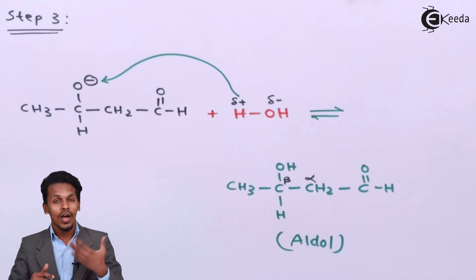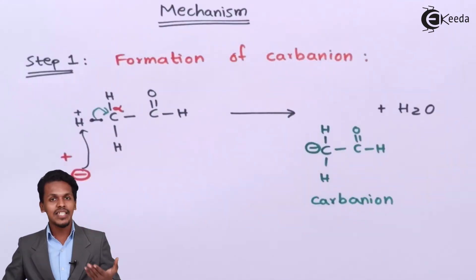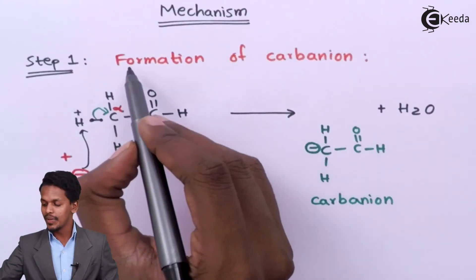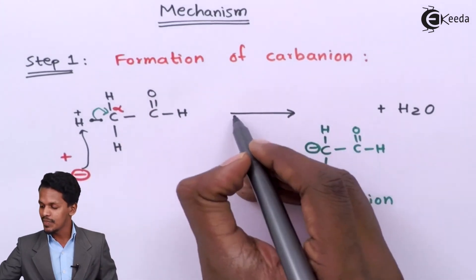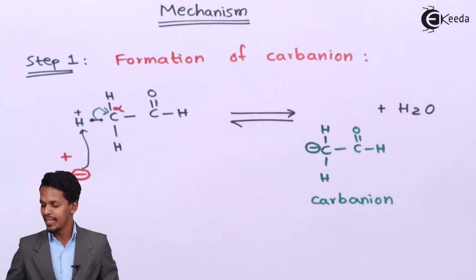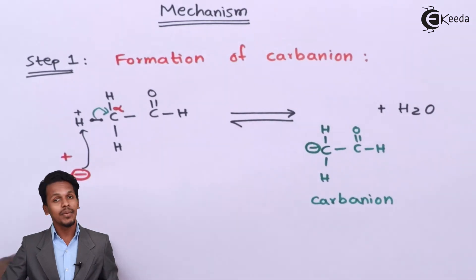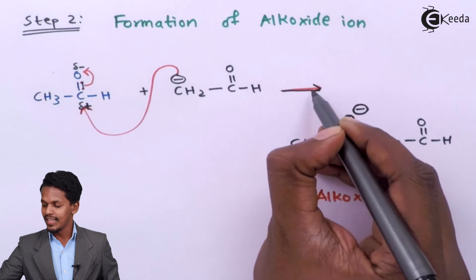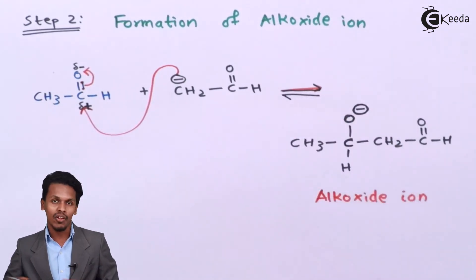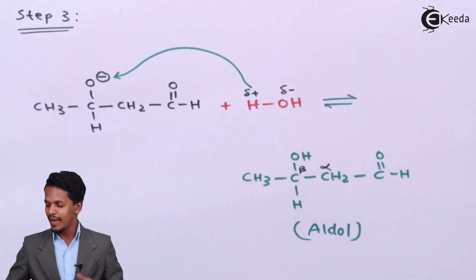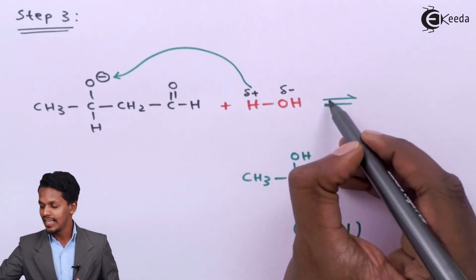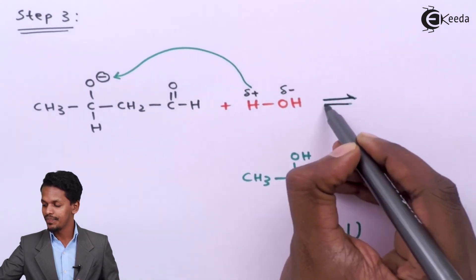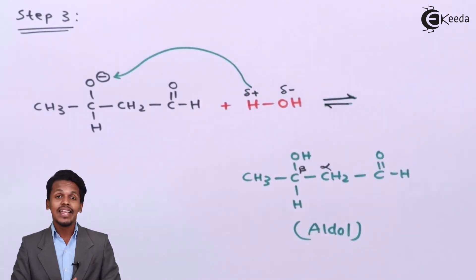To recap: Step 1 is formation of carbanion (reversible reaction). Step 2 is formation of alkoxide ion (reversible reaction). Step 3 gives the aldol product — beta hydroxy aldehyde — also a reversible reaction. This completes the aldol condensation mechanism.